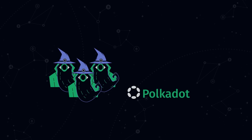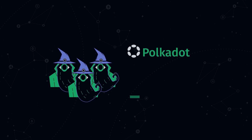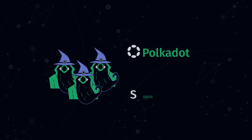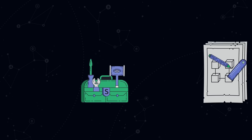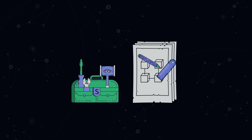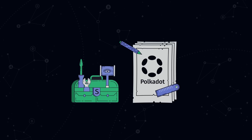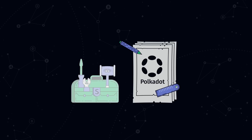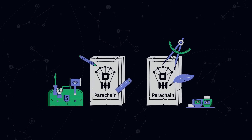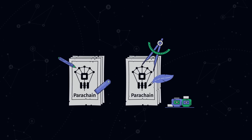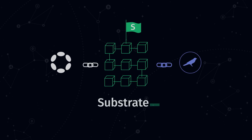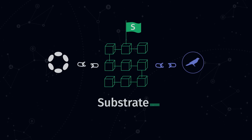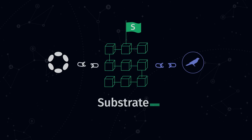The team that created Polkadot also came up with a blockchain building framework called Substrate. In other words, Substrate is a development kit for building blockchains, and is considered one of the simplest and most advanced. The Polkadot network itself was built using Substrate, but building parachains using Substrate is not a prerequisite. Blockchains built with Substrate can exist on their own, without connecting to Polkadot or Kusama.